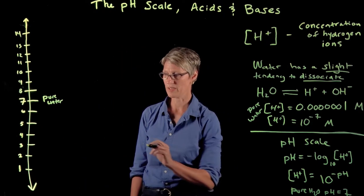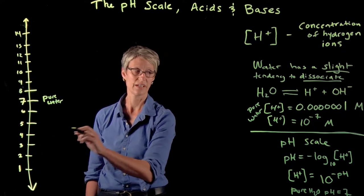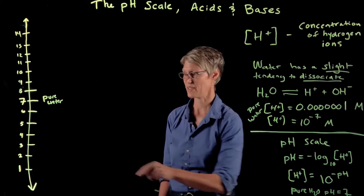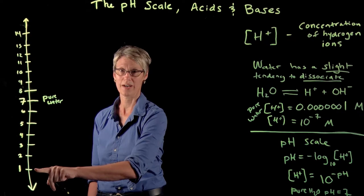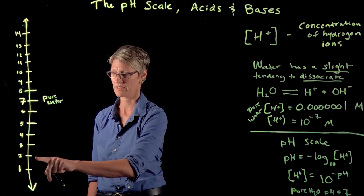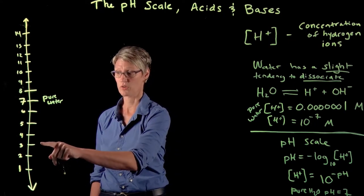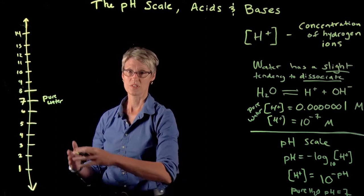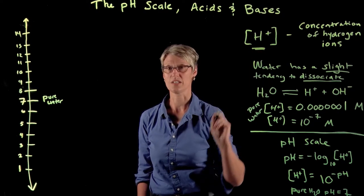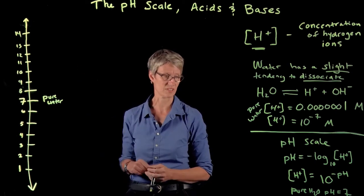With the pH scale, each unit—say from 1 to 2 or 2 to 3—is a difference of an exponent to the base 10. A solution with a pH of 1 has 10-fold more hydrogen ions than a pH of 2, and 100-fold more than a pH of 3. When you move along that scale, the concentration of hydrogen ions is changing by a lot.